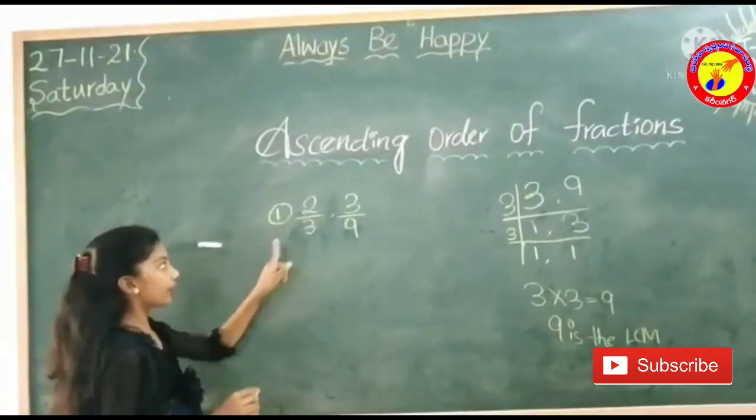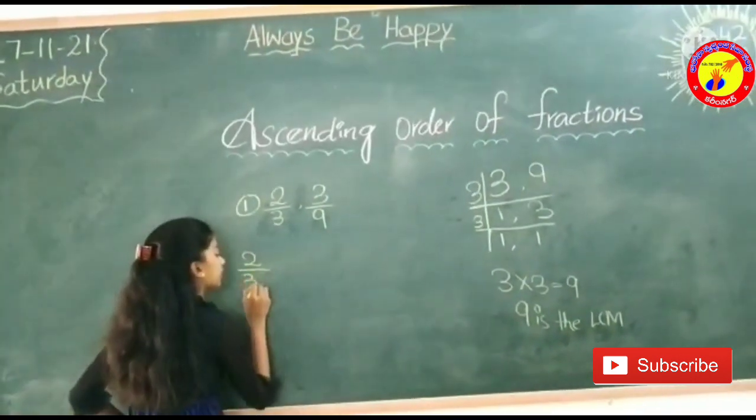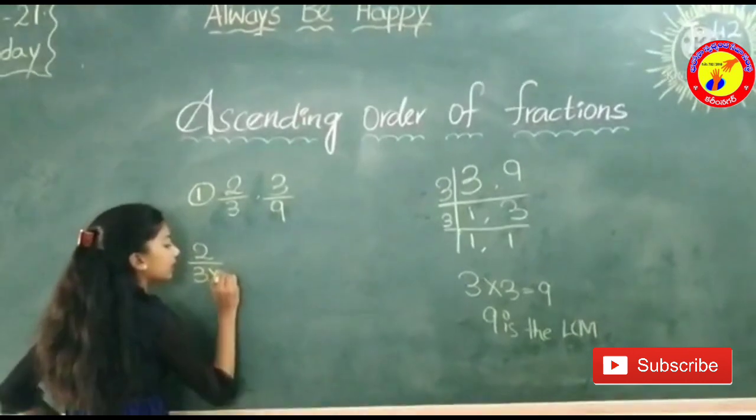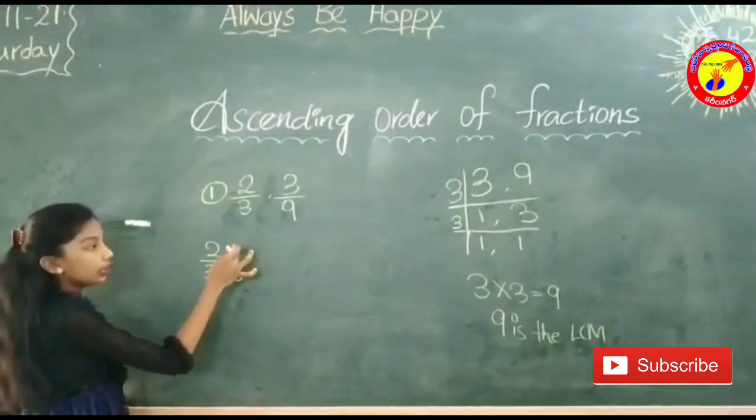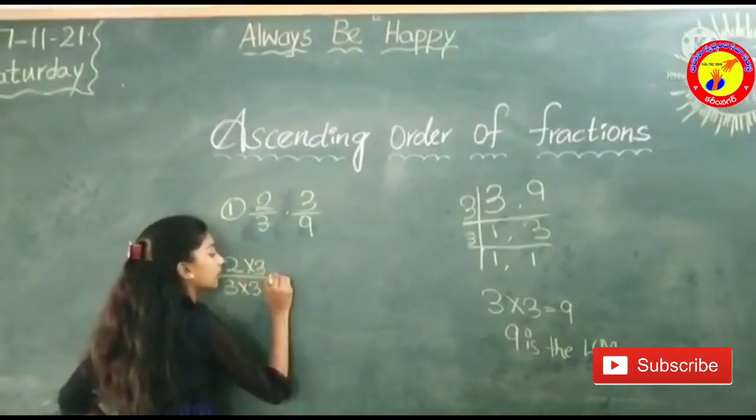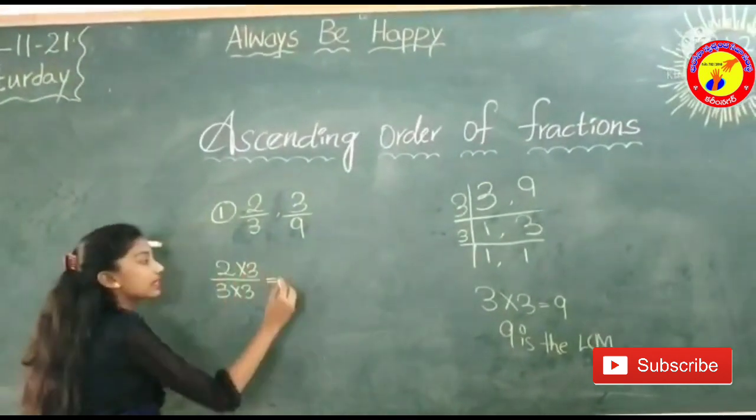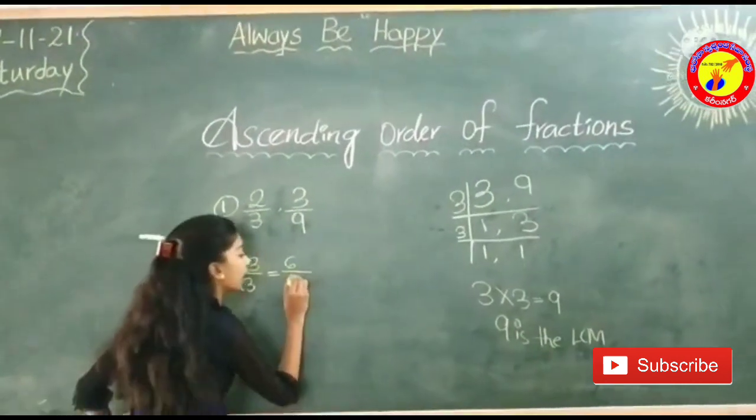Now we should take first fraction, 2 by 3. In 3 tables, 3 3s are 9. So we should write this 3 in numerator's place. 2 3s are 6. 3 3s are 9.